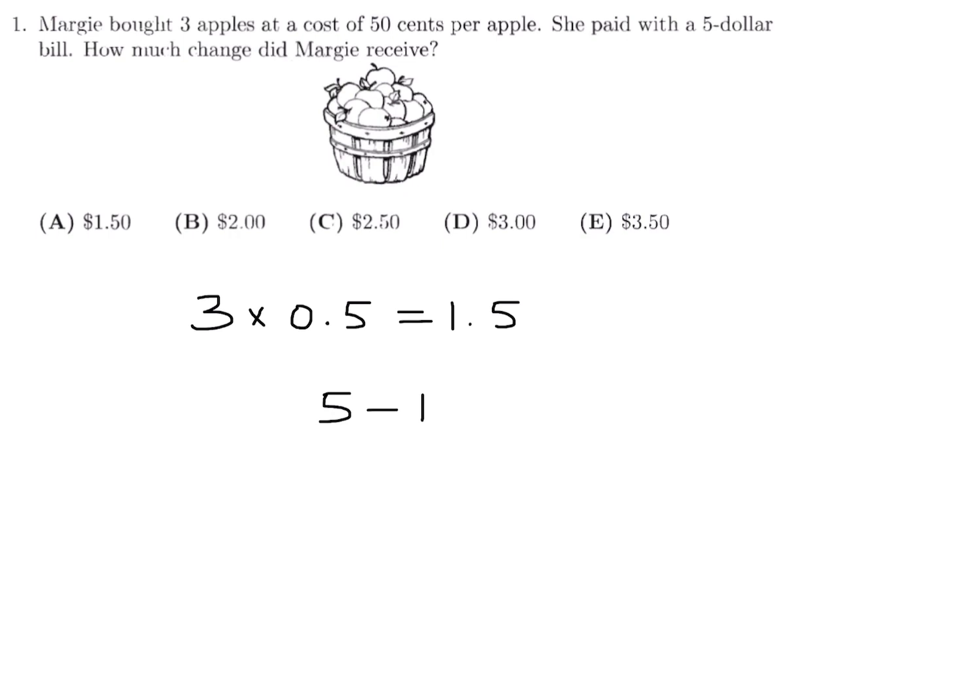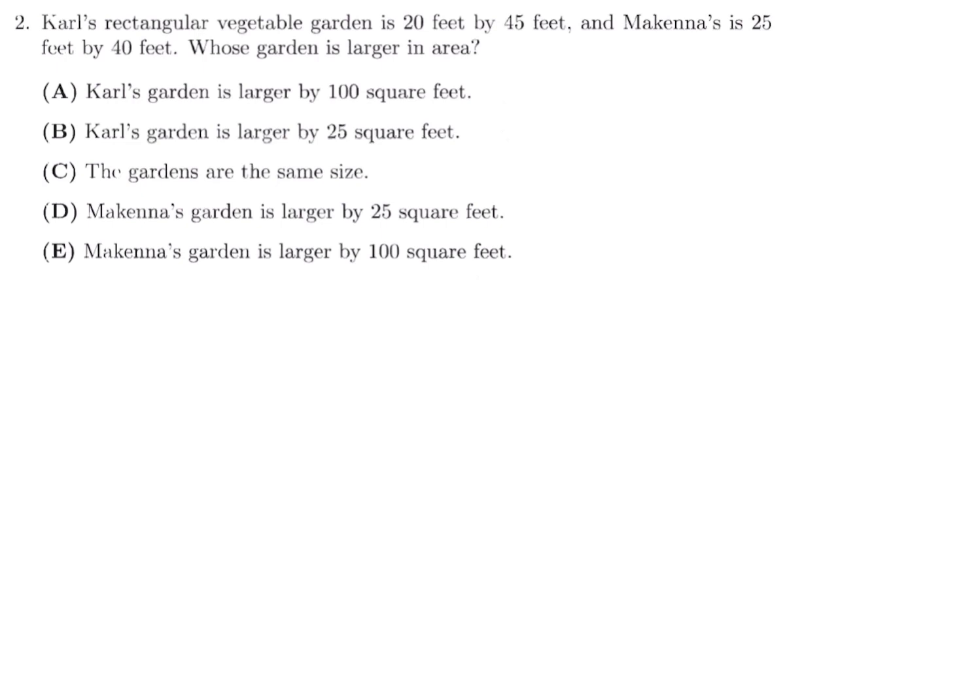Now she paid with $5, so her change will be $5 minus $1.50, and that is therefore three dollars and 50 cents. So number one, the answer is E. Carl's rectangular vegetable garden is 20 feet by 45 feet. McKenna's is 25 feet by 40 feet. Whose garden is larger in area?